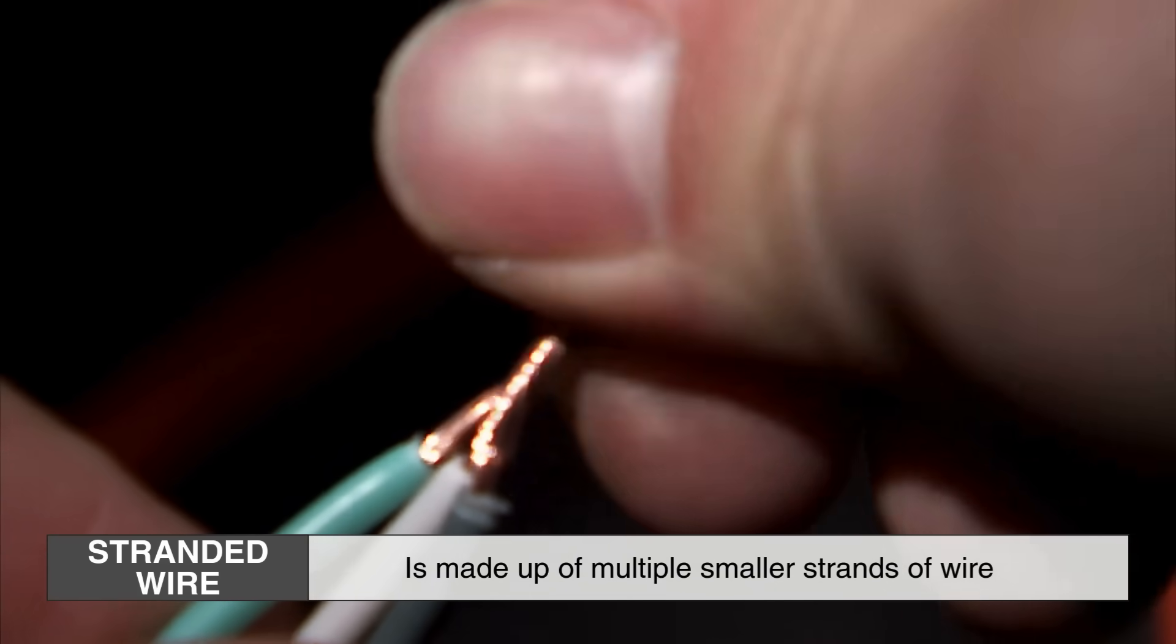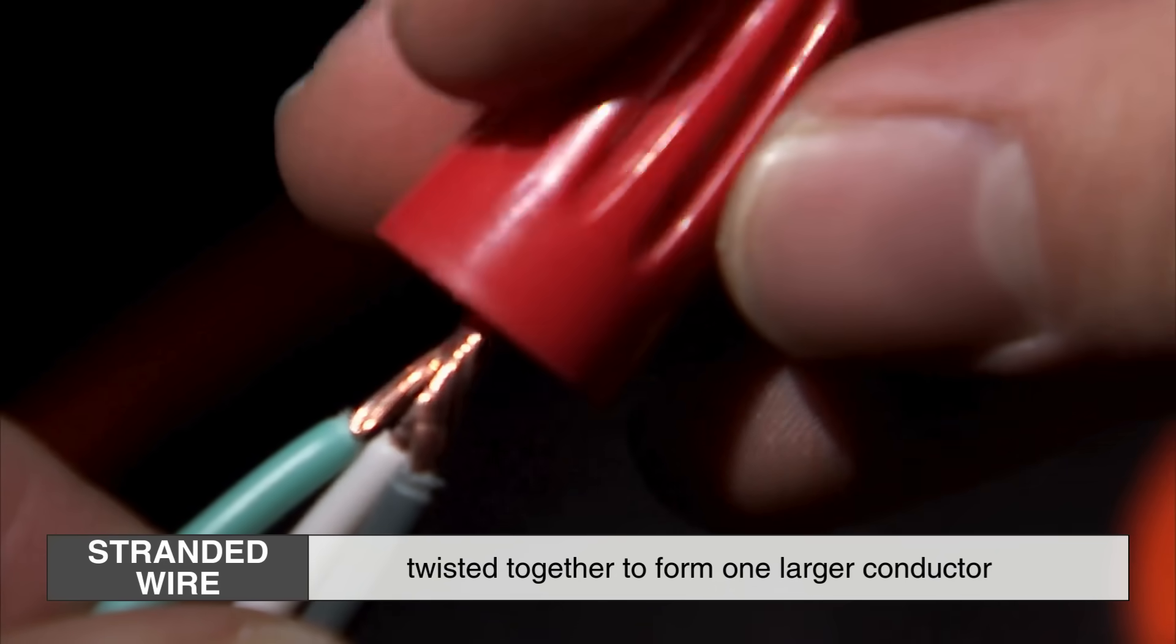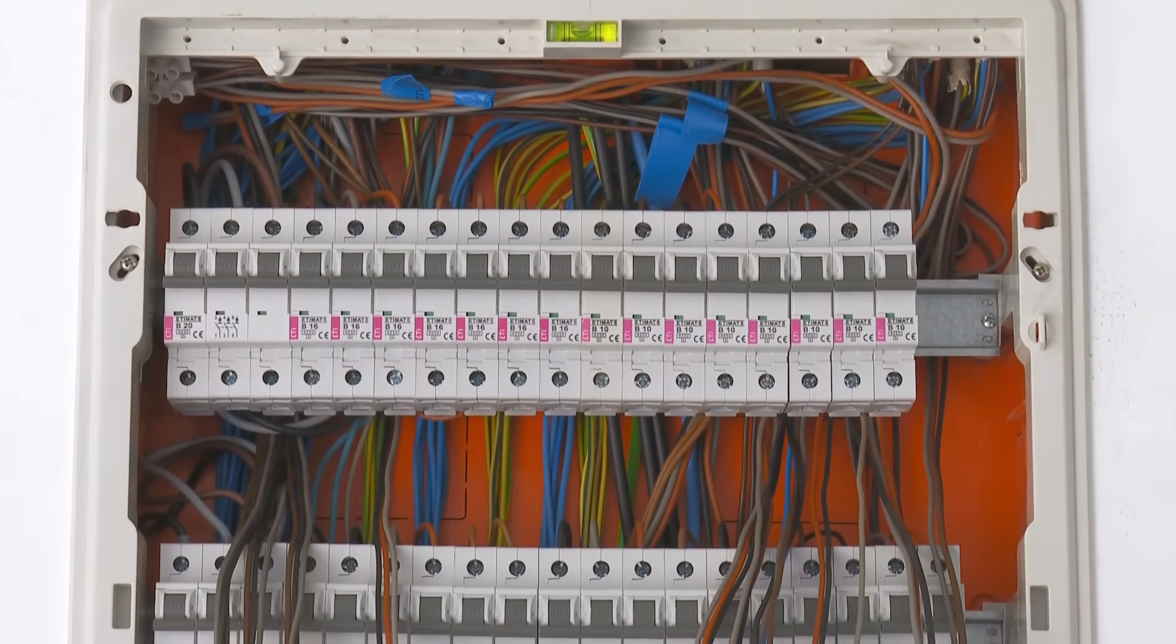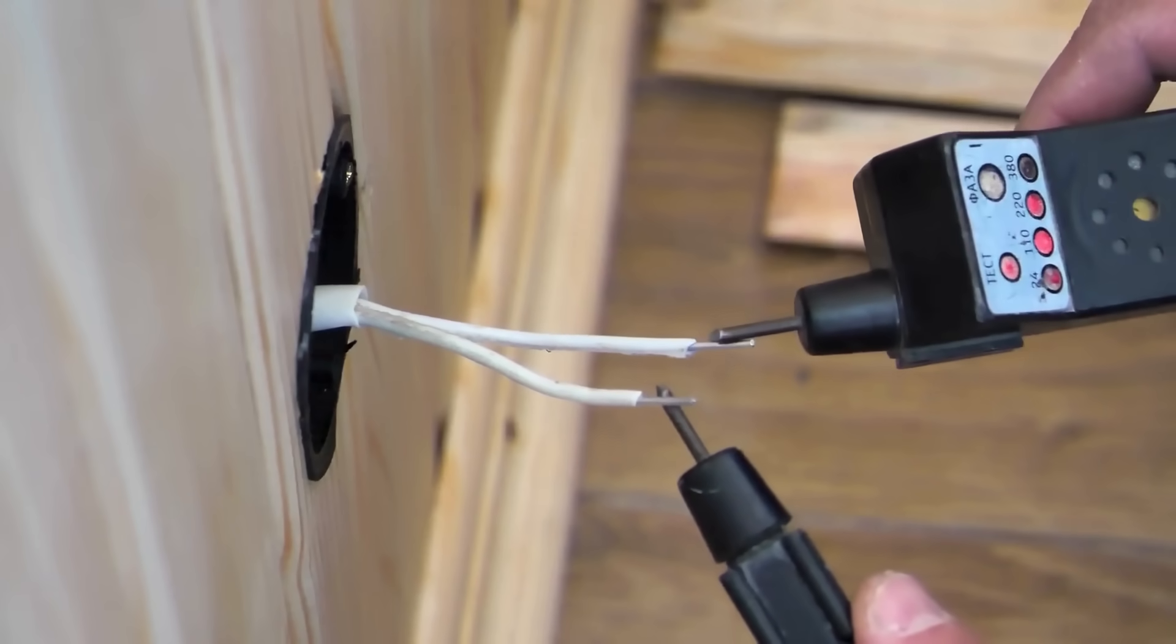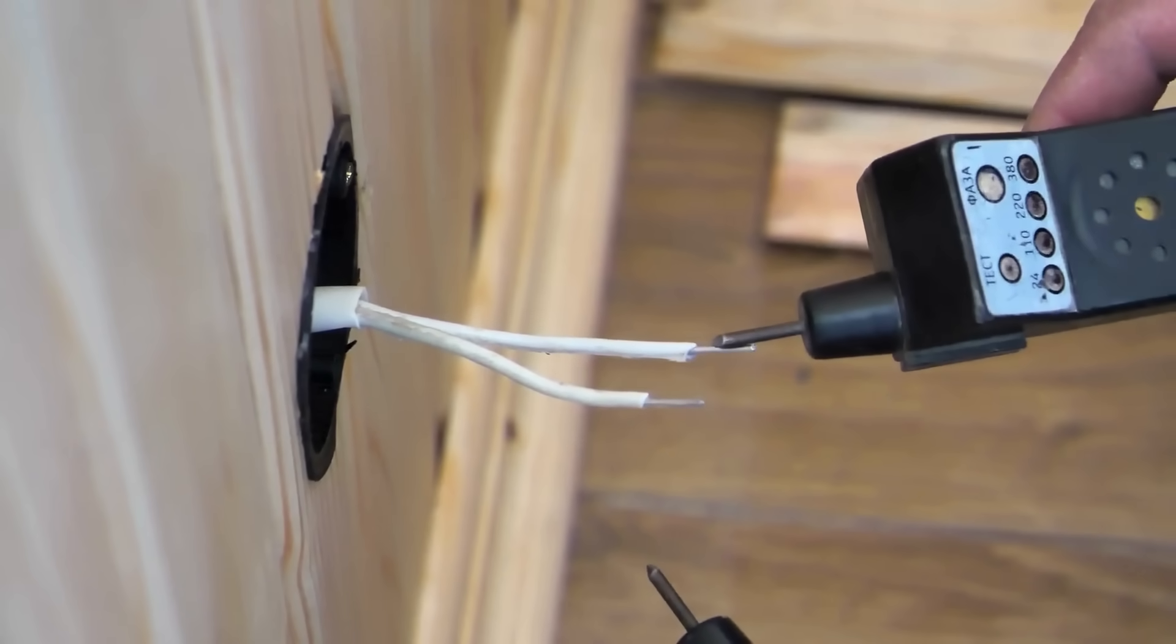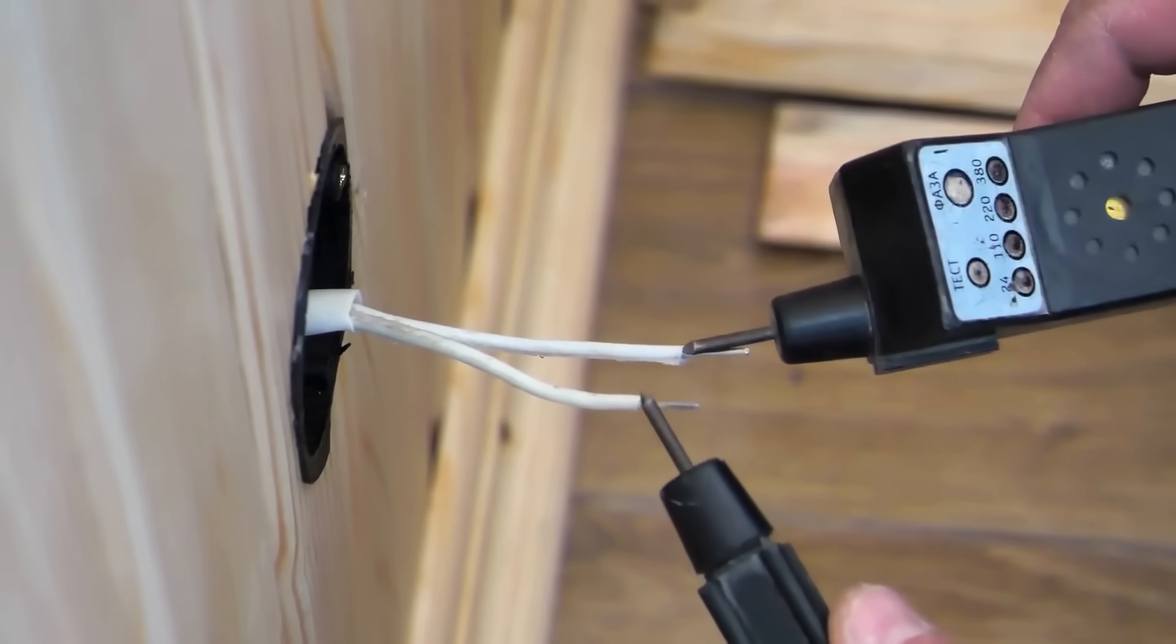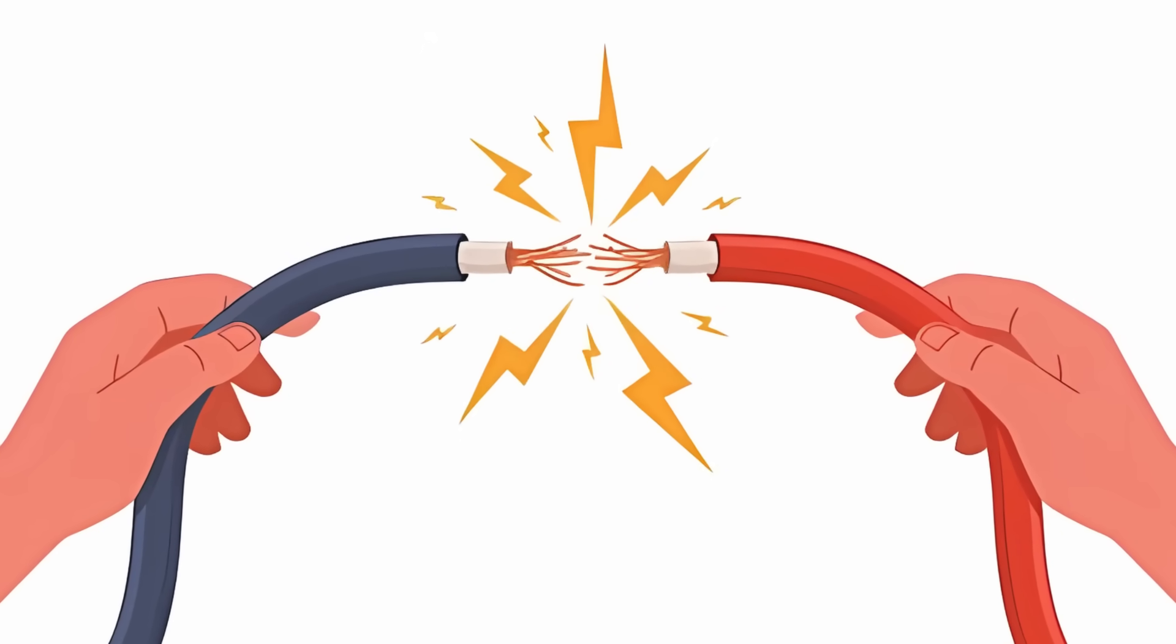From the outside, stranded and solid wire might look similar, especially once they're covered in insulation, but structurally they're quite different. And that difference in structure plays a major role in how each type performs in various conditions.